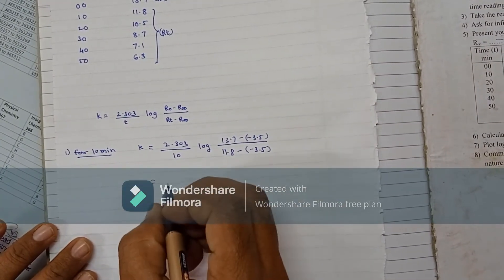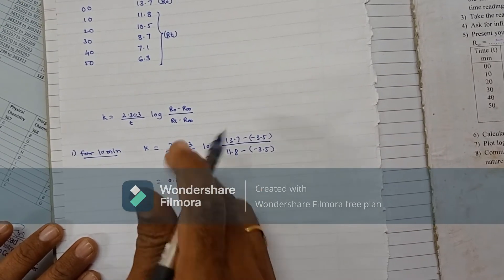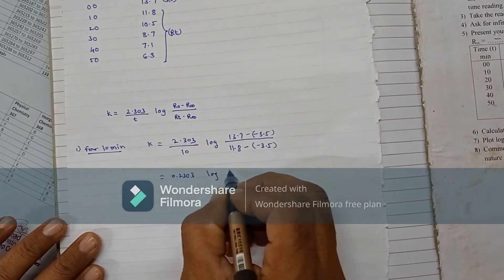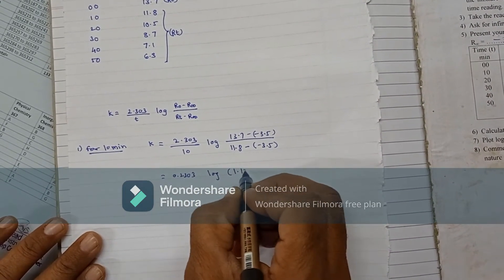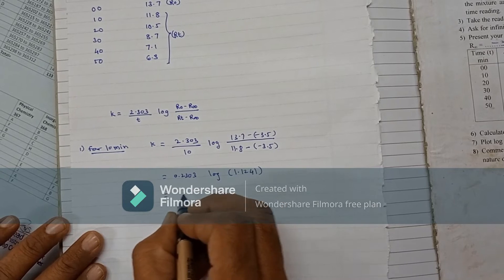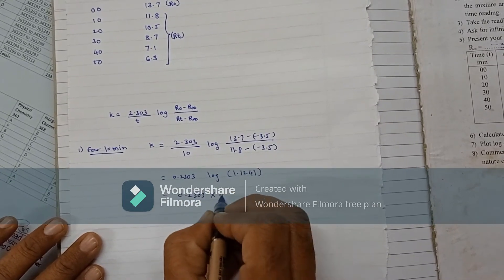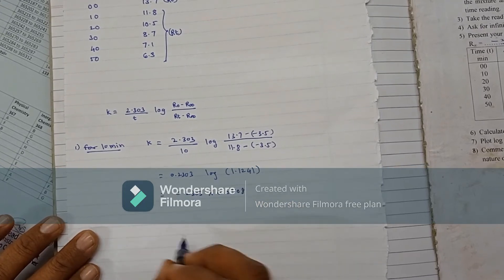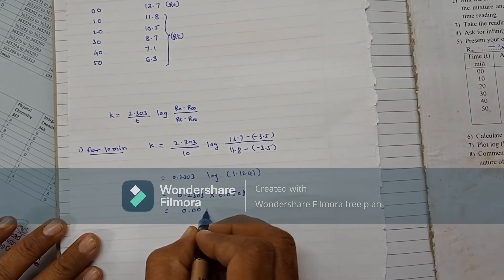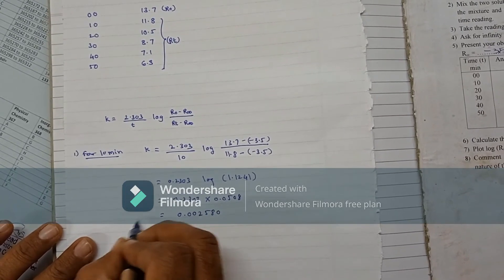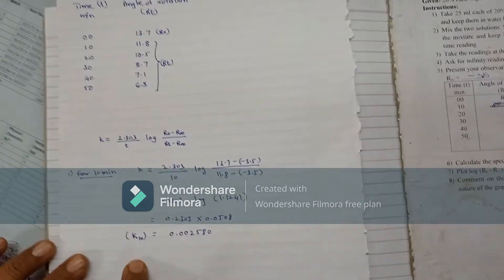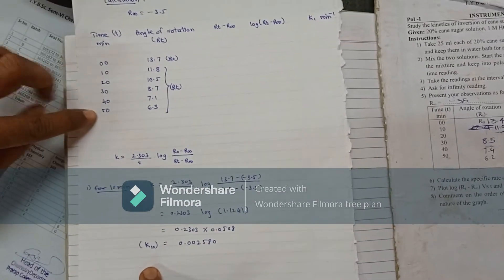After calculating all these terms, dividing 2.303 by 10 and taking the log of 1.1241 gives 0.0508. After multiplying, we get the K value of 0.002580 per minute for 10 minutes. Similarly, calculate the K values for 20 minutes, 30, 40, and 50 minutes.